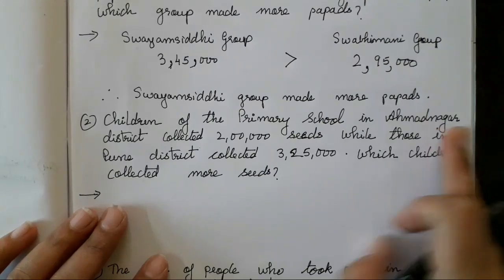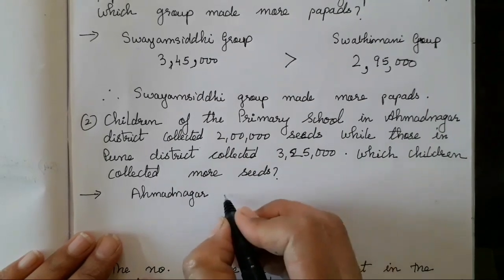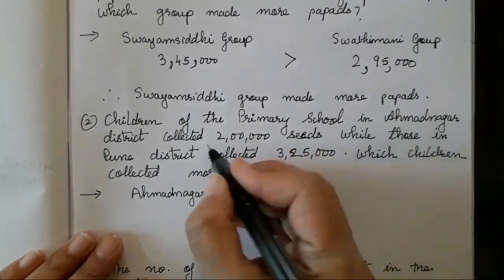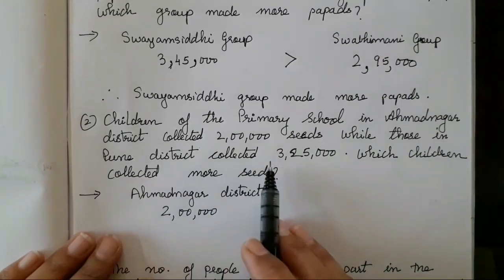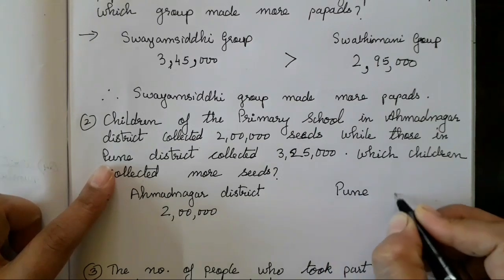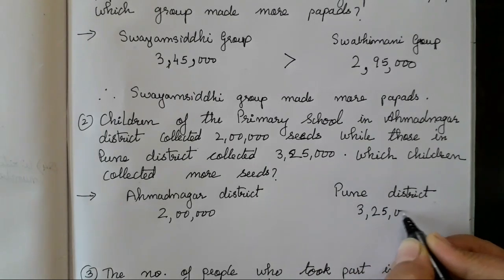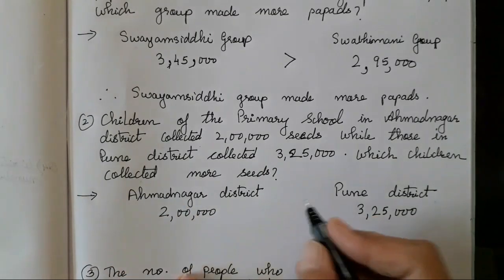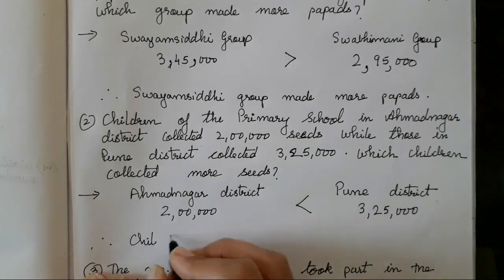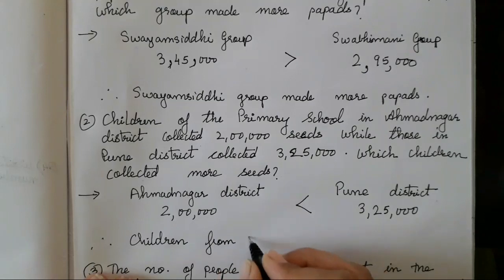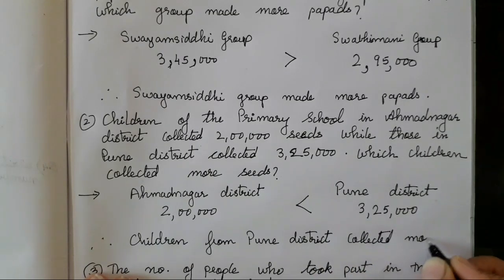Children of the primary school in Ahmednagar district collected this many seeds. So first we will write Ahmednagar district — 2,00,000 seeds. Now, children in Pune district collected this many seeds — 3,25,000. So, over here 2,00,000 and over here 3,00,000. Pune district made more. They have asked which children collected more seeds — children from Pune district collected more seeds.